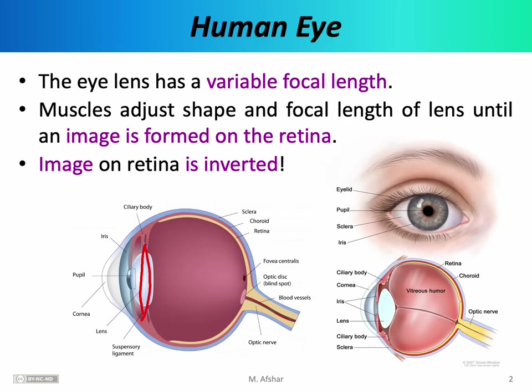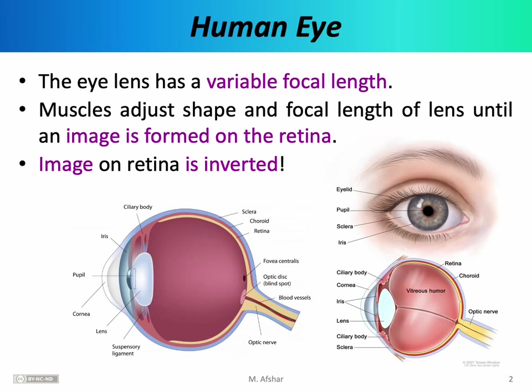As the lens becomes flat, its focal length becomes quite long. On the other hand, if the ciliary bodies relax, the lens of the eye becomes quite rounded, and as it becomes rounded, its focal length becomes quite short. This process of changing the shape of the eye and thereby changing its focal length is referred to as accommodation.